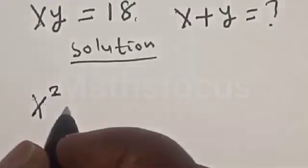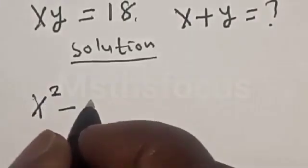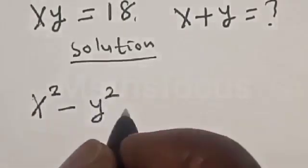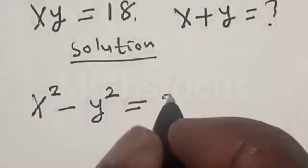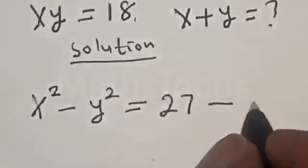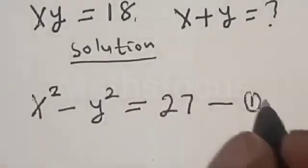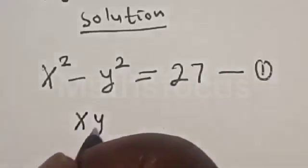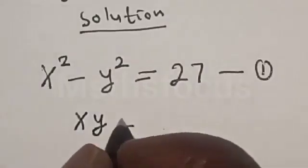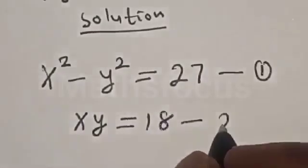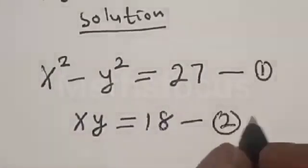x squared minus y squared is equal to 27. Let's call this equation 1. x y is equal to 18. Let's call this equation 2.